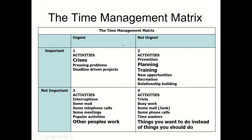Quadrant two is not urgent but equally important. These activities include prevention, planning, and training — so you're planning for an event, you're training for events, so when it comes you don't get yourself into crisis mode. Also new opportunities, recreation, and relationship building — putting money in the bank with colleagues so that if you do need to ask their help, they're willing and able to help you.